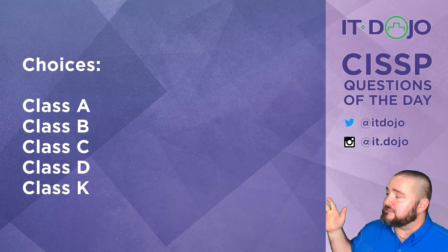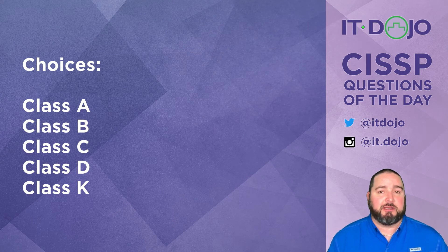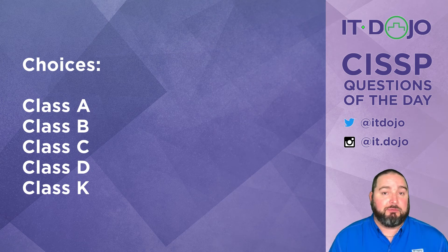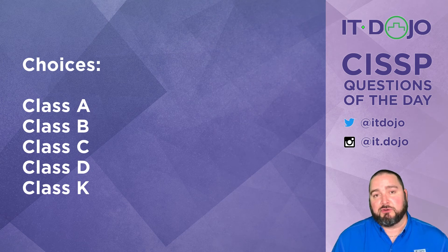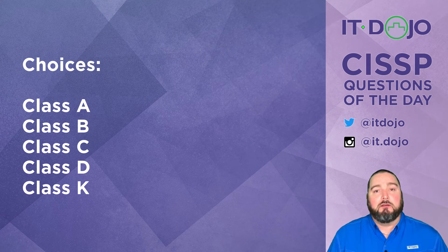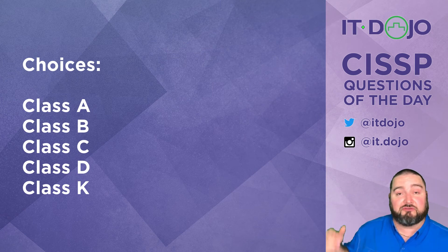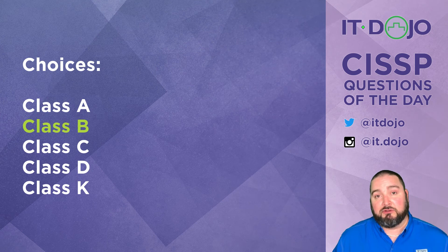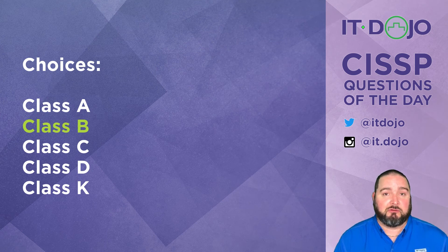The first item on the list is Class A. Class A fires are fires started by common combustibles — things like wood, paper, cloth, plastics, and trash. The answer we're looking for in this question is actually Class B. Class B covers flammable liquids like petroleum, gas, and oil. So Class B is the answer choice we're looking for here.